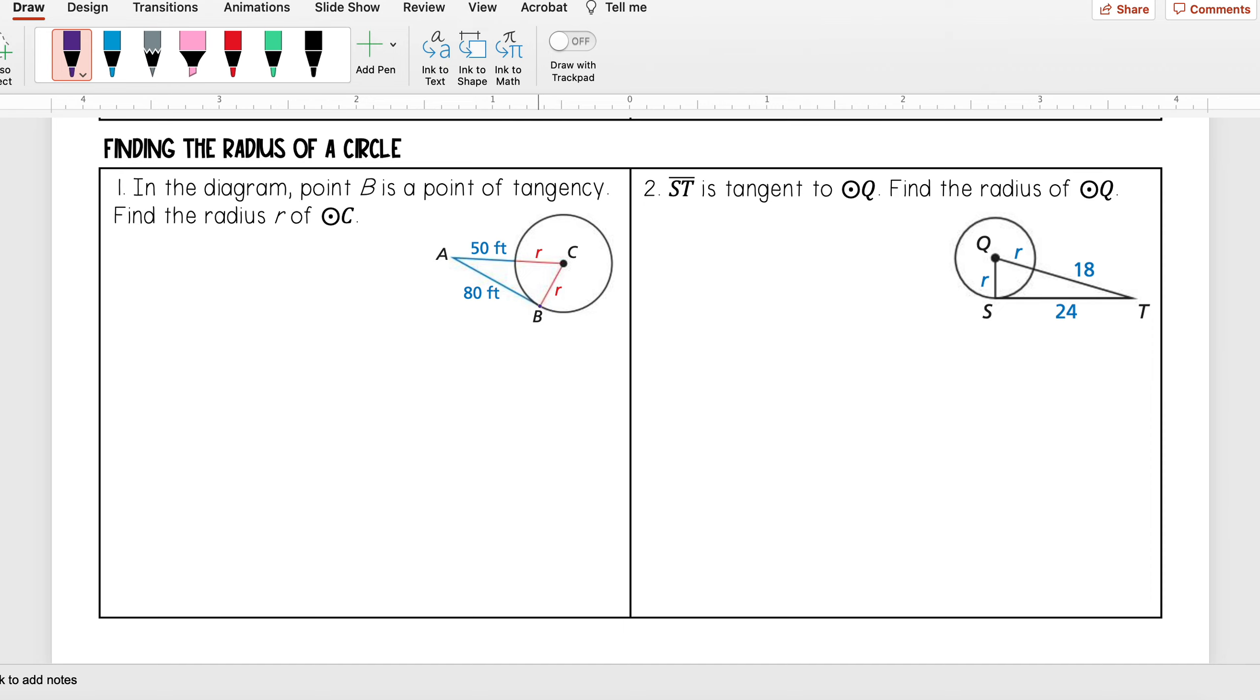Point B is a point of tangency, so that tells me that AB is tangent to circle C. What we learned from our first theorem is that means AB is perpendicular to my radius. So that means I really have a right triangle here.